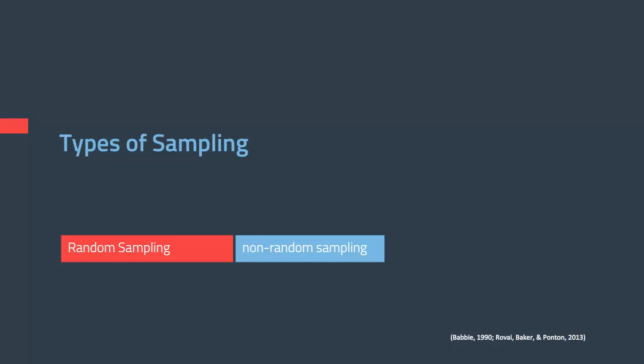Non-random sampling is when you do not have control over who can be included in your sample and you use a population that is basically convenient for you. The downfall of this type of sampling is that not having randomness reduces or limits the generalizability of your results. There are multiple types of non-random sampling, and we're going to talk about two that are often used.